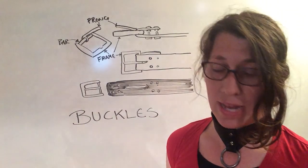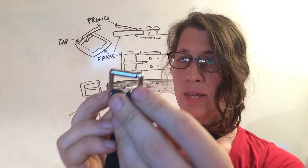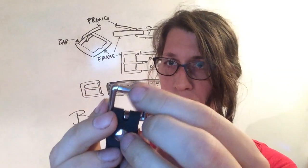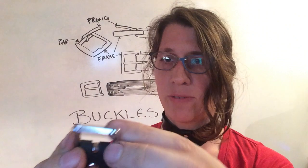So what I'm going to show you now is a simple straight buckle. So we have our frame here, and this little piece, if it spins, is called a ruler, and if it's not there, it's just a frame.